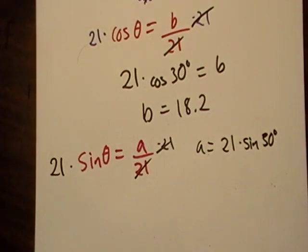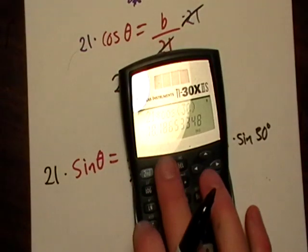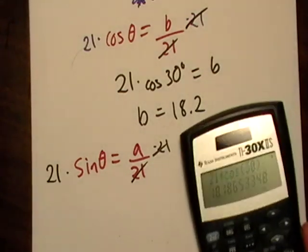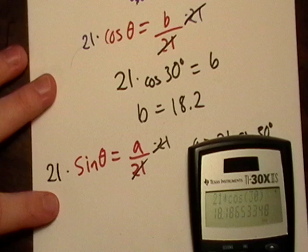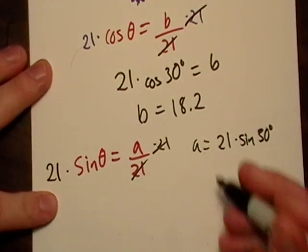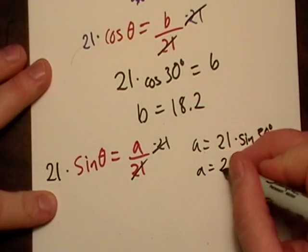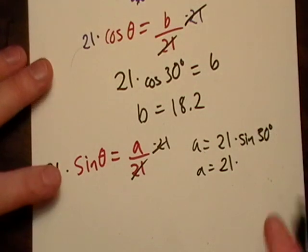I'm going to get A equals 21 times sine of 30 degrees. And make sure your calculator is in what's called degree mode. There should be a little degree, rad, grad, and all that stuff. So, the sine of 30, well, I know that's one half. But, I'm going to type it in here and see what it says. I'm going to get A equals 21 times sine of 30.